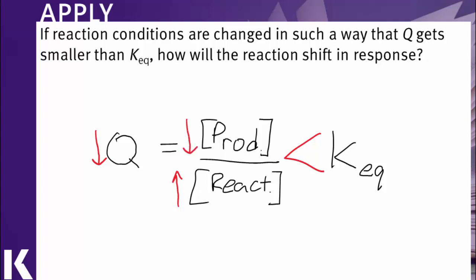In order to return to equilibrium, where Q would be equal to K_eq, we would need to shift the reaction from the reactants to the products. We would need to make more products from our reactants so our reaction would shift toward the products.